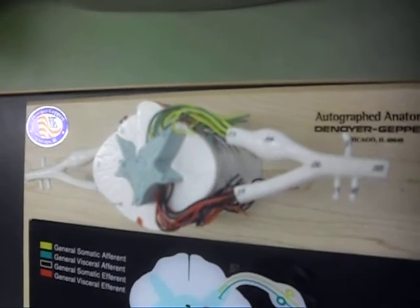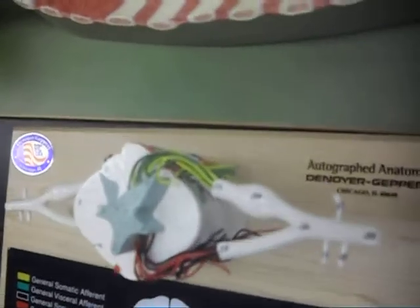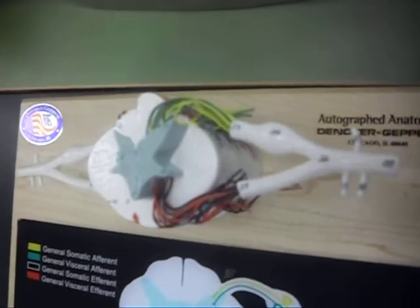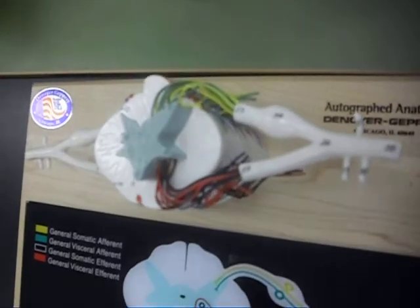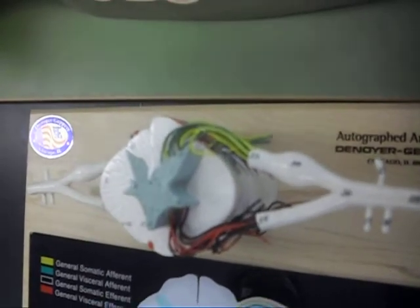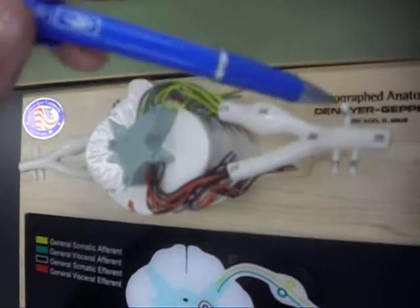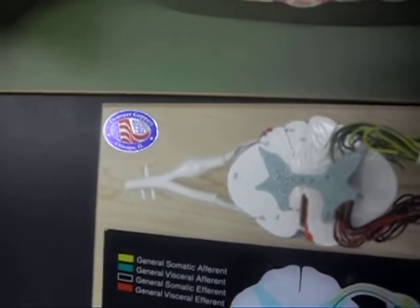Great. Where is your dorsal... stop, what is it called? The dorsal root, there we go. Did I say that? I said that one. Where's your dorsal ramus? There we go. Where is your central canal?